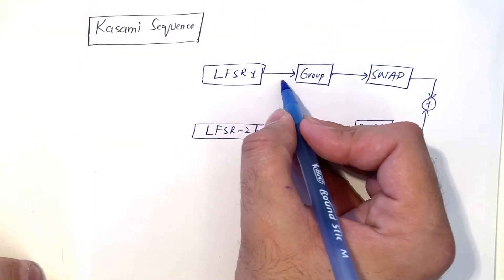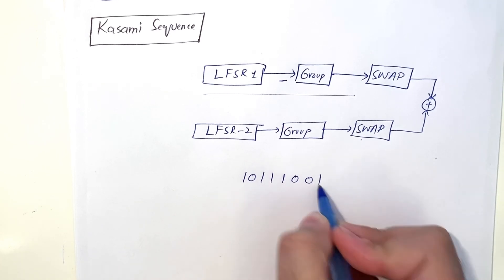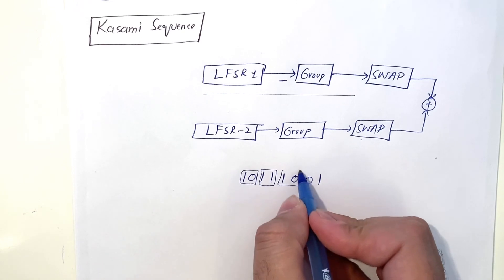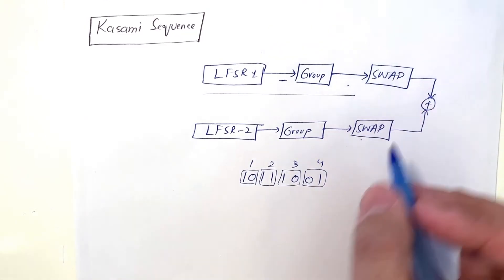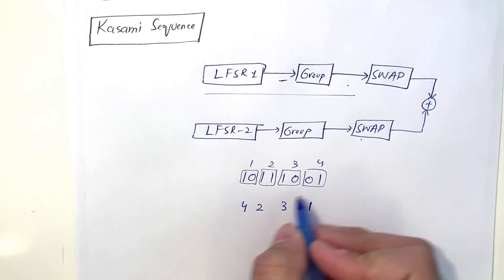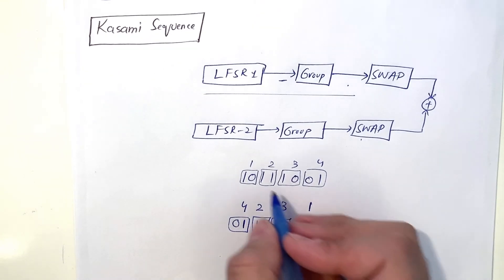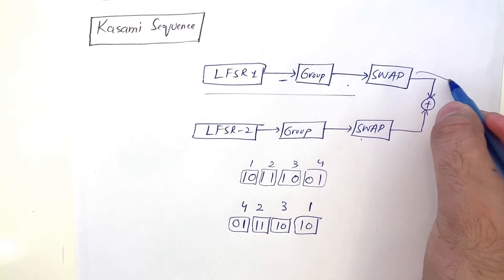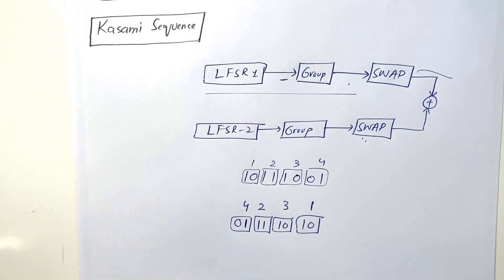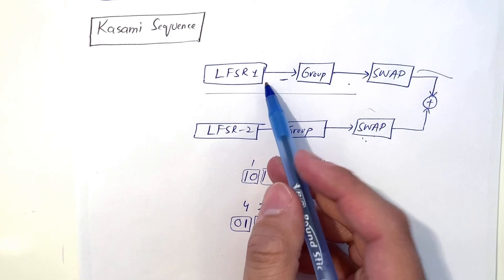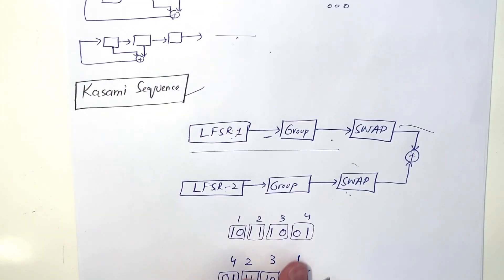For Kasami sequence, similar to gold sequence but with an additional step: the LFSR output is first grouped into blocks (e.g., 2-bit groups), then the blocks are swapped using permutation, and finally XORed with the second LFSR. A different permutation pattern is used compared to gold sequence to increase randomness. Even with different LFSRs, the output values differ, and the permutation-then-XOR approach makes Kasami slightly more random and better than gold sequence.